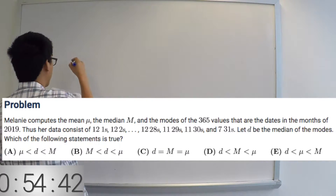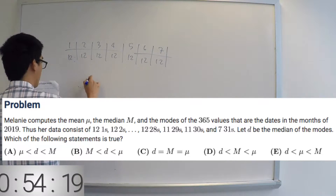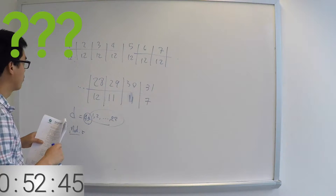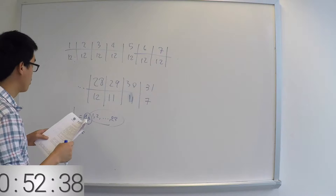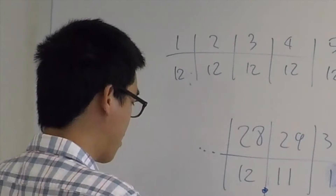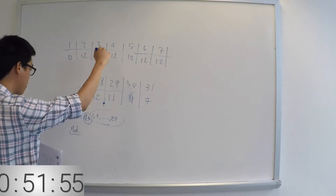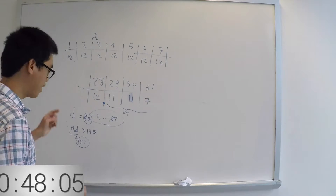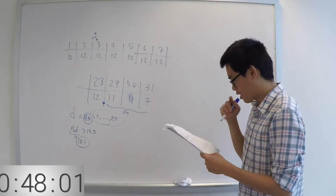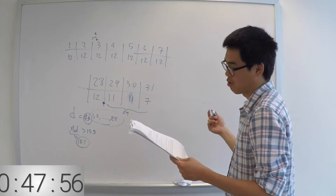We can compute D first: 14.5. So it's definitely going to be less than D. But wait — the median is actually more than 14.5. It took so much time already, so let's just guess. The one with the median in the middle is D, so let's just go with it.